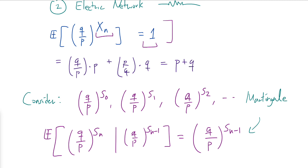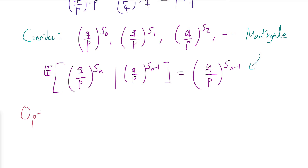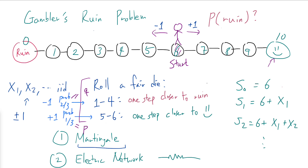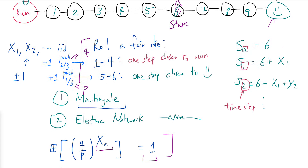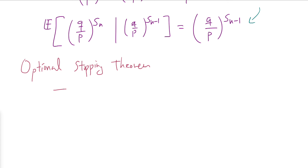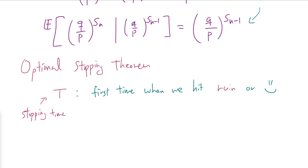For martingales, there is a well-known theorem called the Optional Stopping Theorem, which is quite useful for situations like ours where there is a natural stopping time. The indices here refer to time steps — s₁ is where the random walk is at time 1, and so on. A natural choice of stopping time T is the first time we hit either ruin (0) or the smiley face (10).